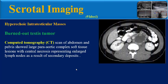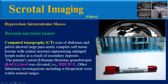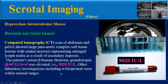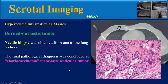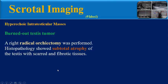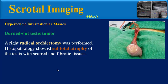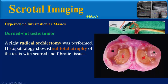CT scan of the abdomen and pelvis showed large para-aortic complex soft tissue lesions with central necrosis representing enlarged lymph nodes. The patient's serum beta-human chorionic gonadotropin was elevated, but other laboratory investigations including alpha-fetoprotein were within normal range. Needle biopsy from an enlarged node confirmed choriocarcinoma metastatic testicular tumor. Right radical orchiectomy was performed, and histopathology showed skeletal atrophy of the testis with scarred and fibrotic tissues.